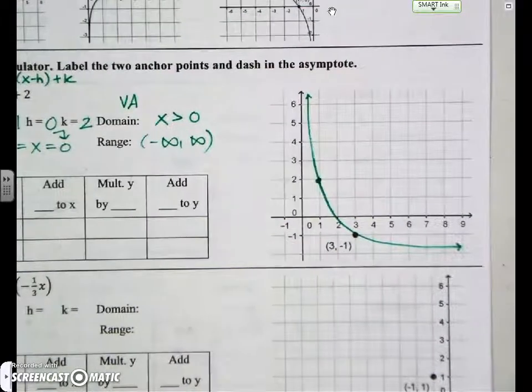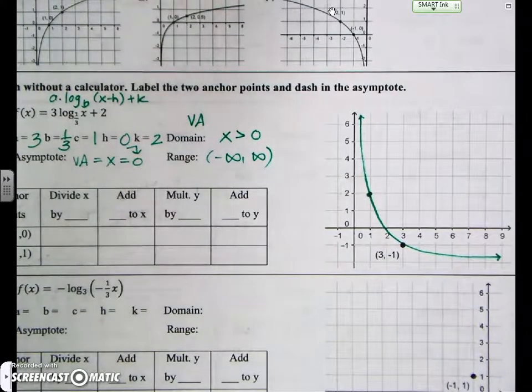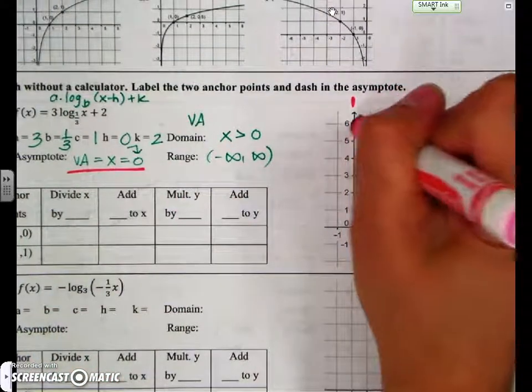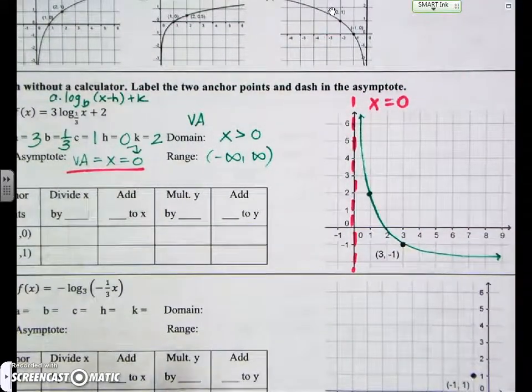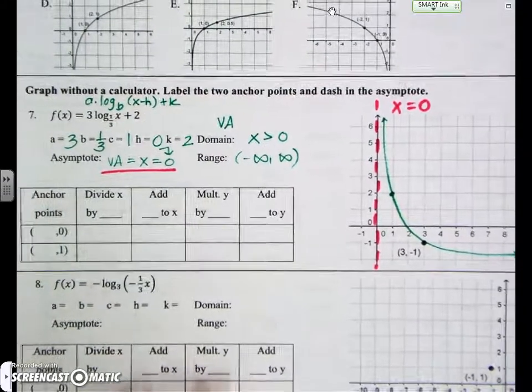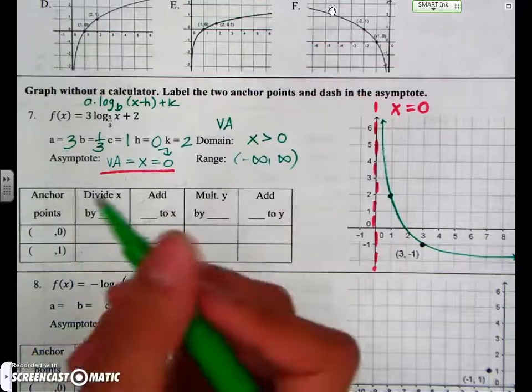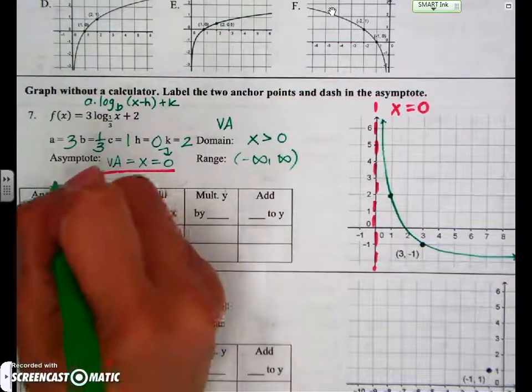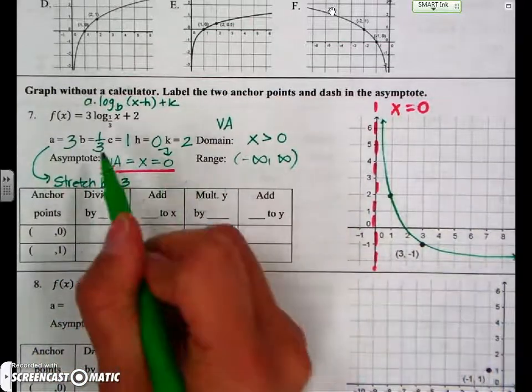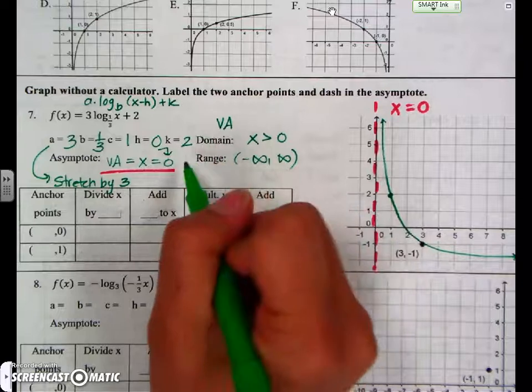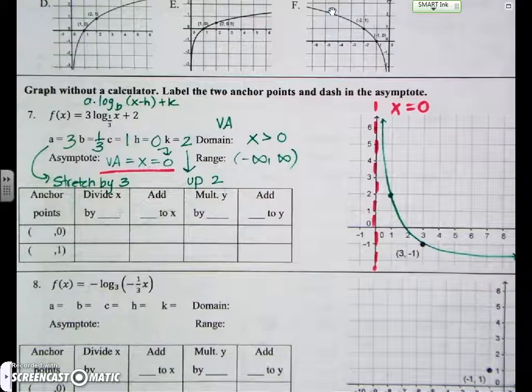Do we know what the vertical asymptote is? Is there a vertical asymptote? Yes, there is. There's a vertical asymptote at x is equal to 0. So you're going to draw a dashed line going up and down at x is equal to 0. The last thing that you need to do is describe the transformations. So what does multiplying by 3 do to the graph? Stretch it. Good, thanks Isaac. So you're going to stretch by 3. The base just tells you your parent function. C is 1, h is 0. So the only other thing that's changing is k going up 2 units.